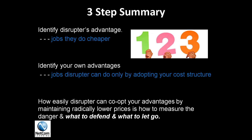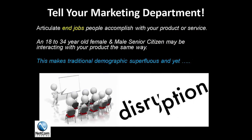So here's a three-step summary. First, identify the disruptor's advantage — for example, an online university delivers knowledge transfer in a more cost-effective way than a traditional university. Then identify your own advantages — for a traditional university, that might be the sense of community and credentialing. How easily a disruptor can co-opt your advantages while maintaining radically lower prices is how to measure the level of danger of the disruption and what to decide to defend and let go. Tell your marketing department to articulate the end jobs people accomplish with your product or service. An 18-to-34-year-old female and a male senior citizen may be doing the exact same thing with your product — under this new demographic, we would put them in the same category. This makes traditional demographics superfluous.